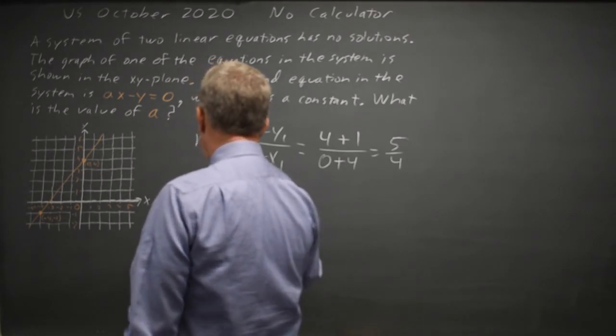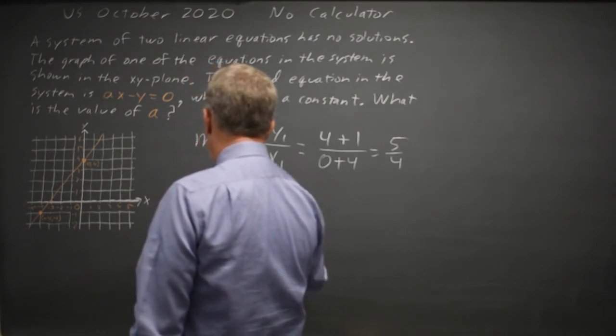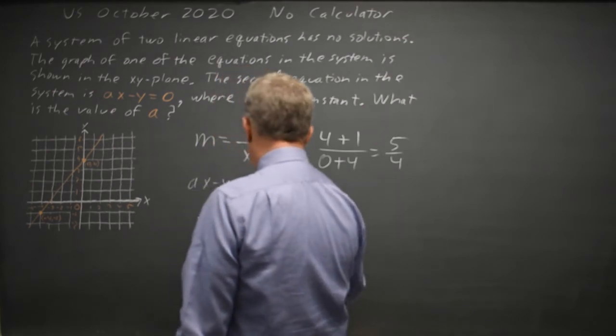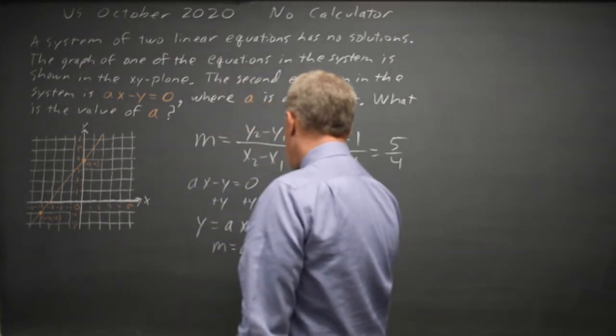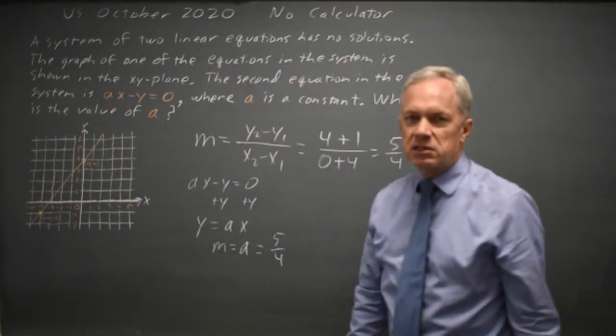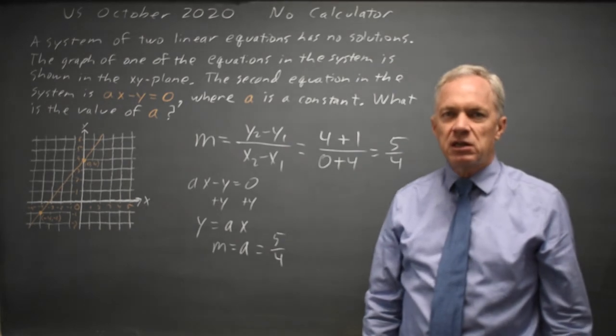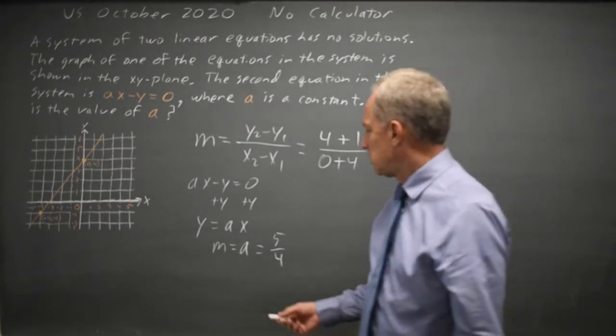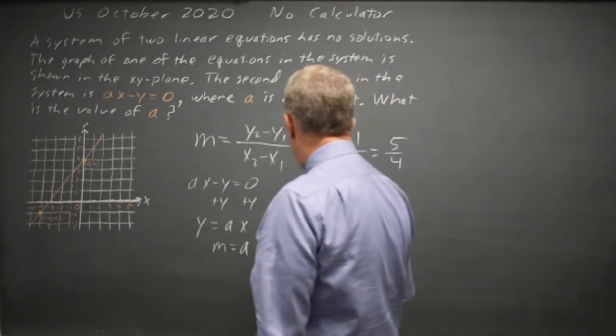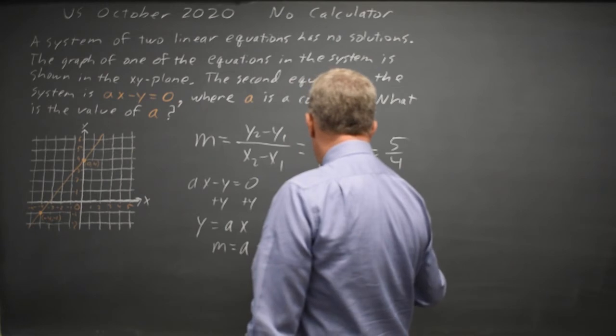I get Y equals AX. So the slope here is A and the slope has to be 5 fourths because for no solution in the system of linear equations in the plane they both have to have the same slope. So I would grid in 5 fourths or 1.25.